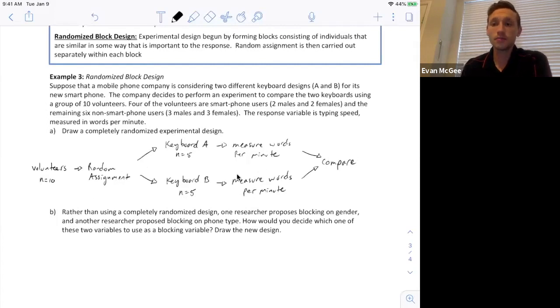But there is a better method for this. Rather than using a completely randomized design, one researcher proposes blocking on gender and another researcher proposes blocking on phone type. How would you decide which one of these two variables to use as a blocking variable and draw the new design? So there is a better method because we had four volunteers that were smartphone users and then the other six are non-smartphone users. So since four of the people already have experience with a smartphone, they might get a head start on their typing speed and the phone that they've been using could influence the response.